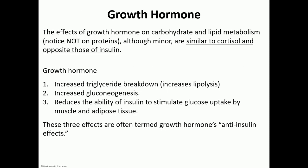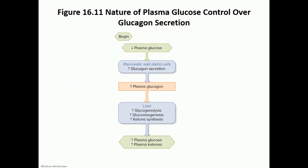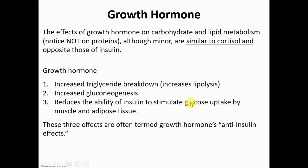The effect of growth hormone on carbs and lipids is very similar to cortisol: it increases lipolysis, increases gluconeogenesis, and actually decreases the ability of insulin to stimulate glucose uptake by the cells. Growth hormone prevents insulin from making GLUT4 transporters available, reducing the ability of insulin to stimulate glucose uptake by muscles and adipose tissue. Since it opposes the effect of insulin, it is known as an anti-insulin hormone.